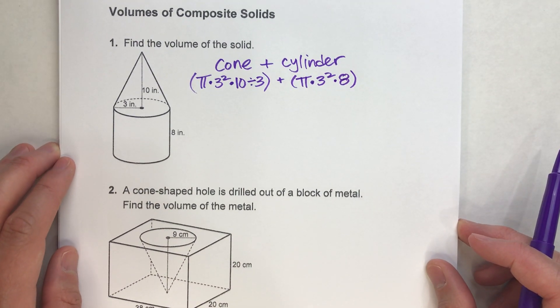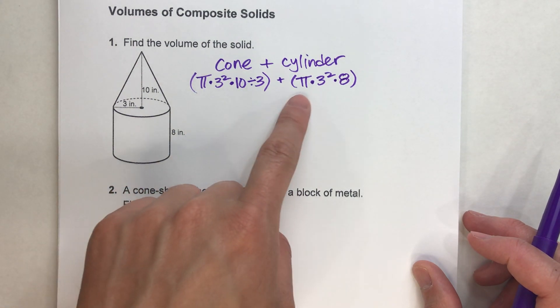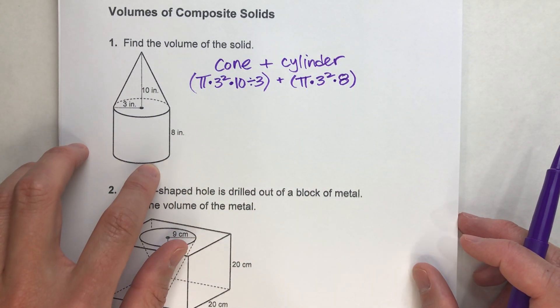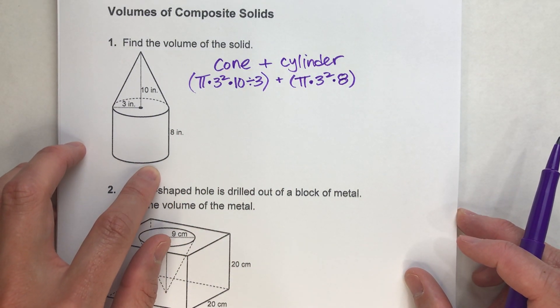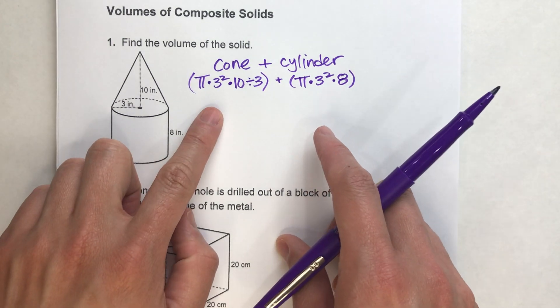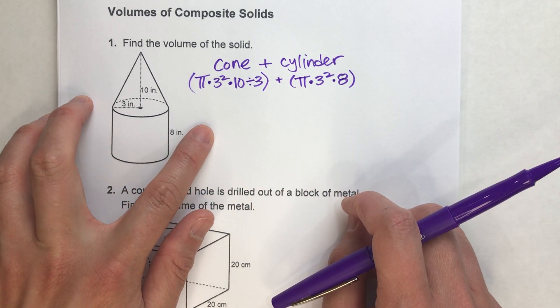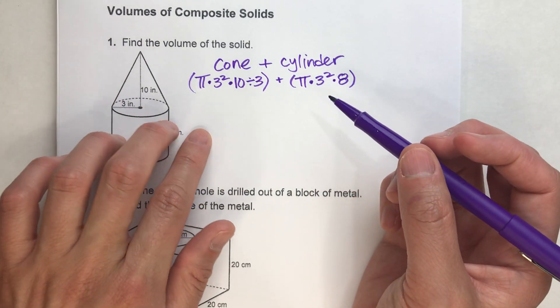Now one of the keys to doing this is notice how we have pi in our answers. That means we're going to have an approximate answer here. So what we're going to need to do is simplify this down as much as we can before we really need to put in the calculator.